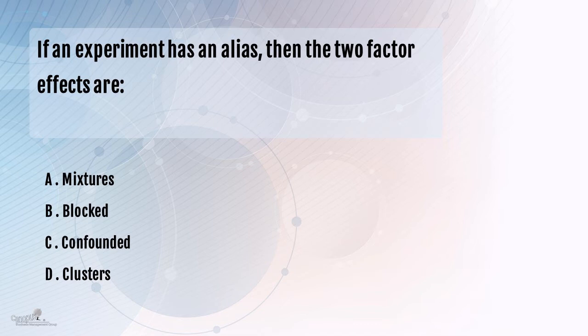So this mix-up or aliasing — in statistics, we call that as confounding. So you could say that B, C, D is confounded with factor A. Clearly, the answer to this question is confounding.